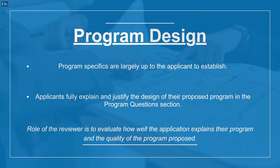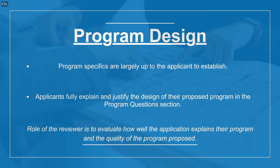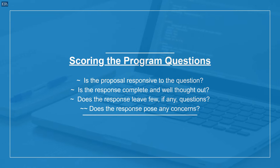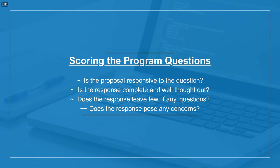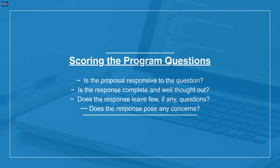Program design. Program specifics are largely up to the applicant to establish. Applicants fully explain and justify the design of their proposed program in the program questions section. The role of the reviewer is to evaluate how well the application explains their program and the quality of the program proposed. When scoring the program questions, ask yourself: Is the proposal responsive to the question? Is the response complete and well thought out? Does the response leave few, if any, questions? Does the response pose any concerns?